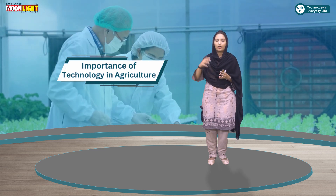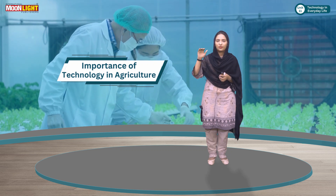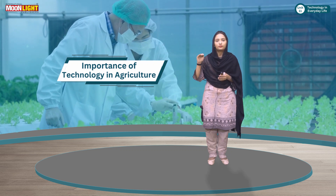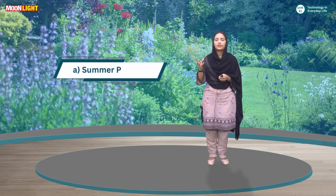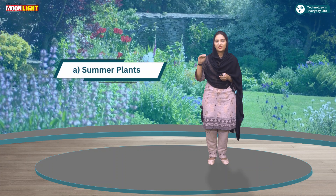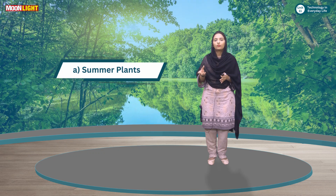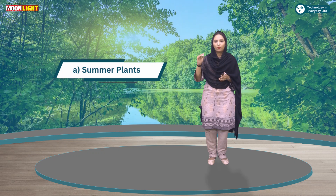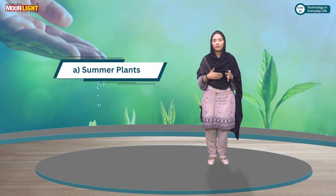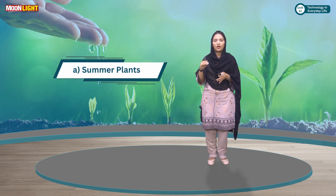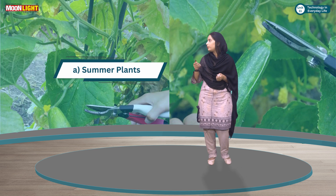After this, we will see what are the summer plants and what are the winter plants. Summer plants are those plants that grow in the summer season, and one reason is that they need water and sunlight. If the sunlight is low or the water is low, they don't grow.